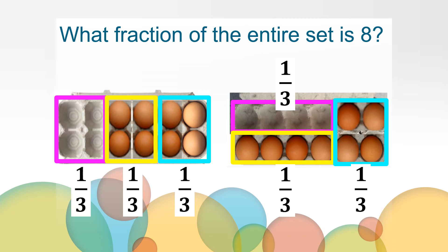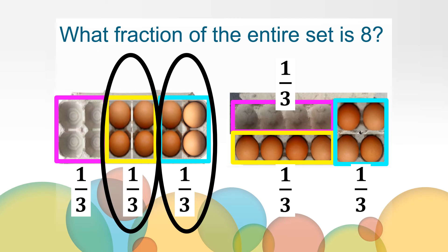So what fraction describes the eight eggs that are left in our carton? We can see that four eggs is one third. So eight eggs would be two thirds.